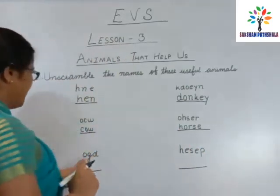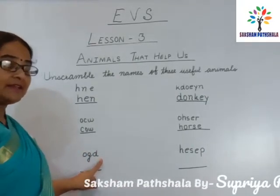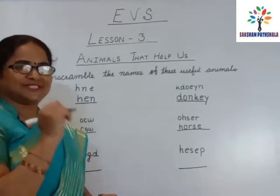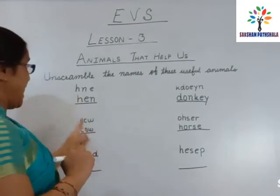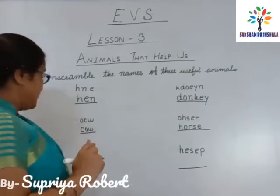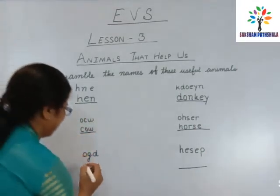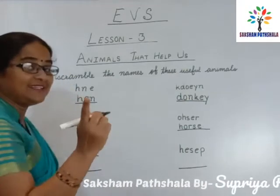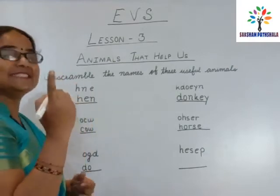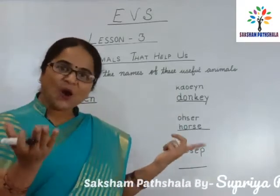Good. Now here — O, G, D. Which animal is this? Good — Dog. Very good. The animal's name — you have to write the animal's name. First letter D, then O, then G. D, O, G. Good.